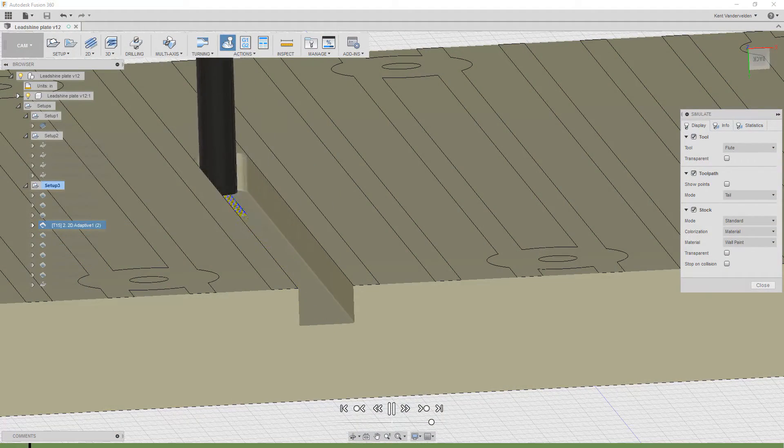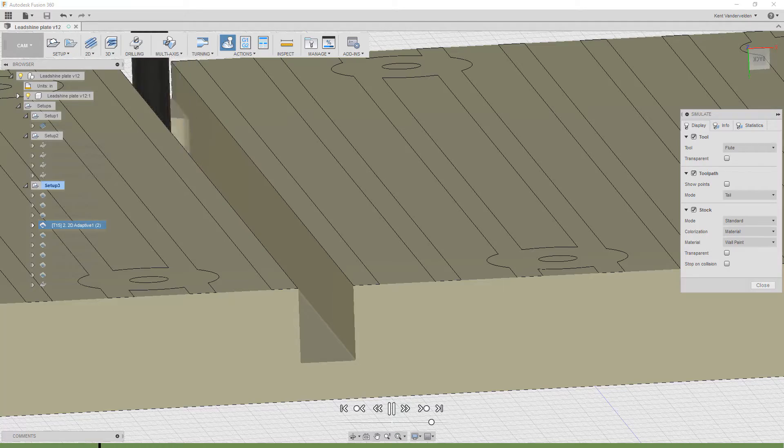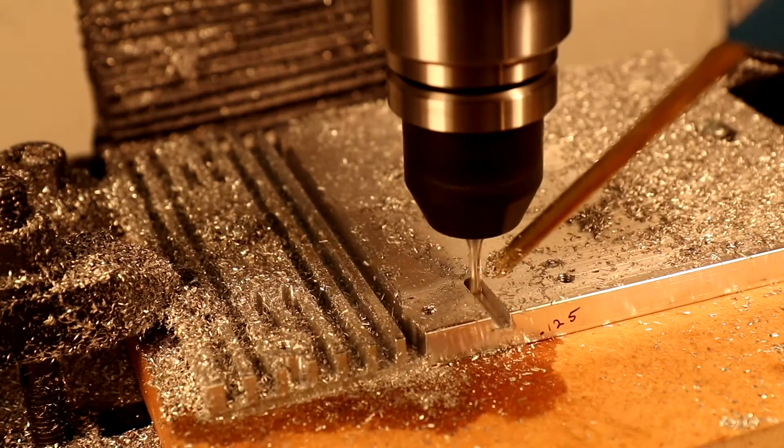The second strategy was 2D adaptive clearing. The length of cut was one half the depth of the slot. This strategy was faster than the pocketing strategy and no additional tools were broken.